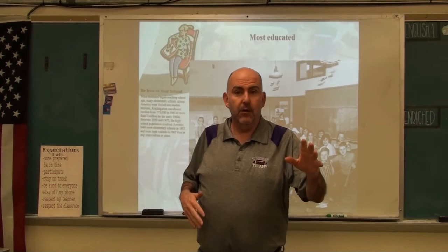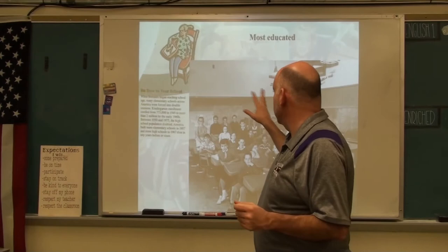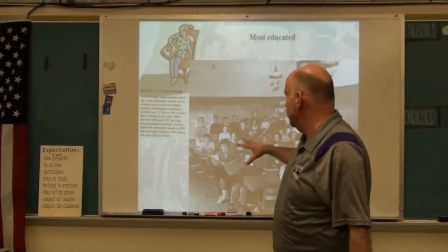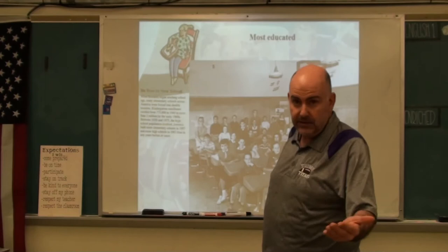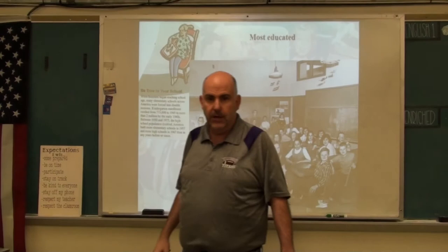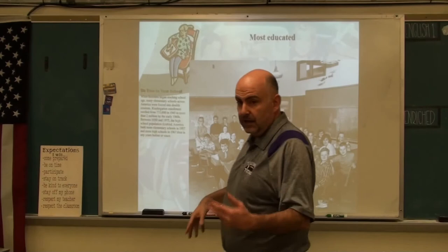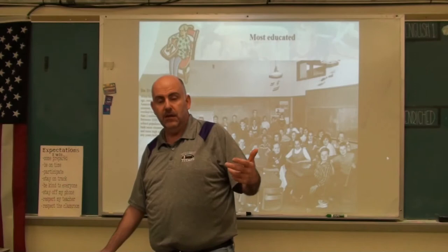Okay, sorry — that first file got cut off a little quicker than I thought. We're going to pick up here with file number two, where we left off talking about the Boomer generation. This is the most educated generation. This is when we started to see lots of schools being built — this is when TriWay was built in 1963. Schools were consolidating because kindergarten enrollment went from 773,000 in 1945 to 2 million by the early 1960s. High schools more than doubled. Kids were becoming more educated, with kids going to college, mainly because of the GI Bill and parents having money from good-paying jobs.